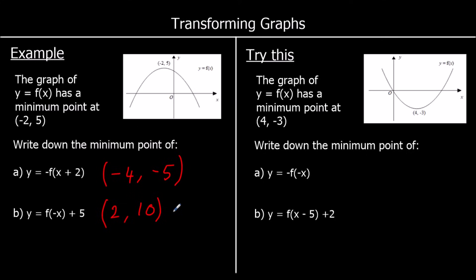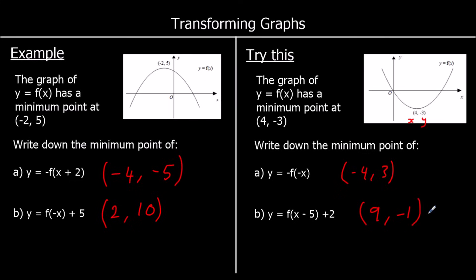For part b, the change inside the bracket multiplies x by negative 1, so -2 becomes 2. The change to y is plus 5, so 5 goes up to 10. For the next practice question starting with minimum point (4, -3): for y equals minus f of minus x — reflecting in both axes — multiply x by -1 and y by -1, giving (-4, 3). For y equals f of x minus 5 plus 2: add 5 to x giving 9, and add 2 to y giving -1. So the point shifts 5 to the right and 2 up.